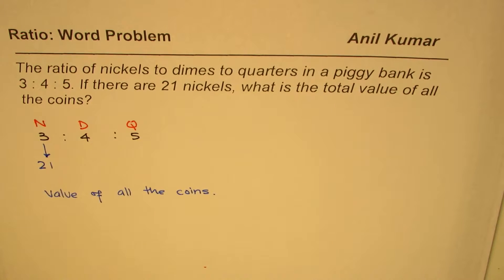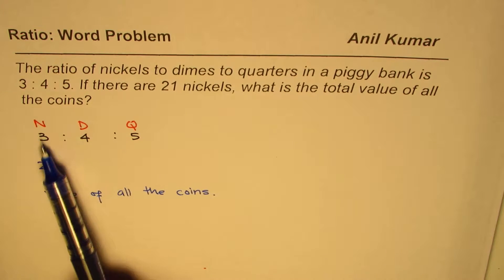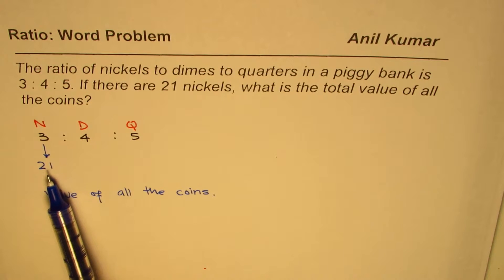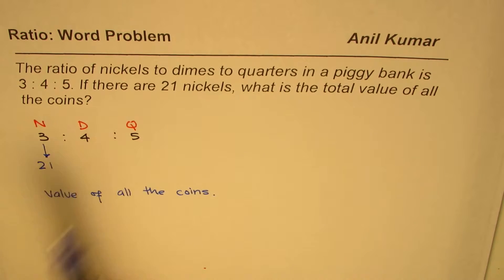So that is the question for you. You can pause the video, answer the question, and then look into my suggestions. How can we do such a question? Well, one way is, since we know the number of nickels and the ratio is 3 is to 4 is to 5.